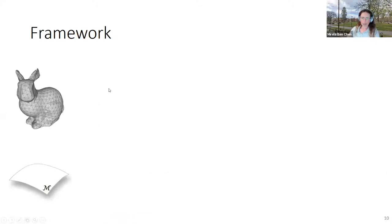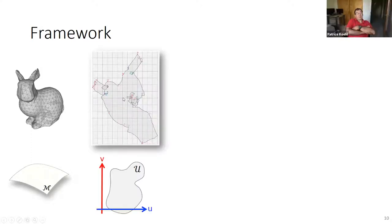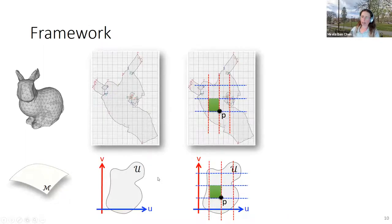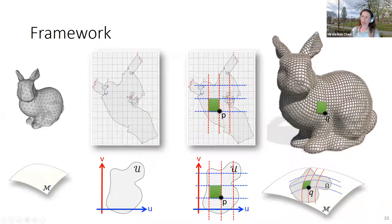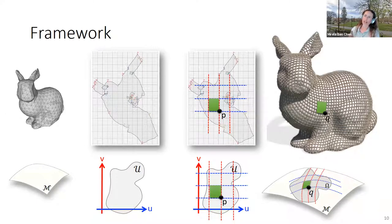Our framework is as follows. We start with our surface M and build the parametrization with parameter domain U. On the parameter domain we build a grid — quad, triangle, or hex. We map this grid using the parametrization back to our surface, and this gives us the semi-regular remeshing structure. This is the general framework of parametrization-based semi-regular remeshing: flatten the shape, put a grid on it, and push the grid forward back to the surface to get the quad mesh.